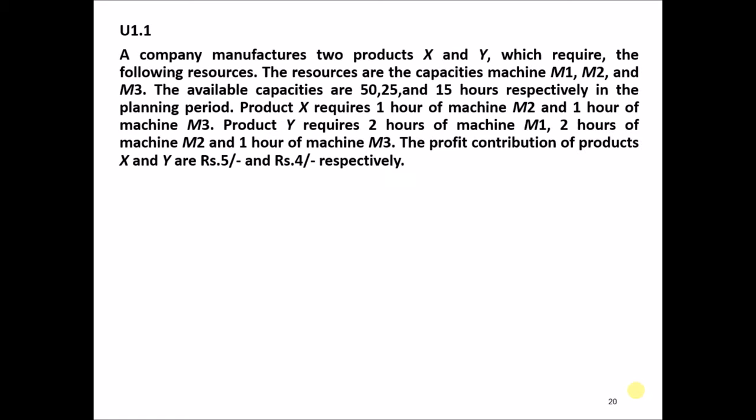The first problem: a company manufactures two products X and Y, which require the following resources — the capacities of machines M1, M2, and M3. The available capacities are 50, 25, and 15 hours respectively in the planning period. Product X requires 1 hour of machine M2 and 1 hour of machine M3. Product Y requires 2 hours of M1, 2 hours of M2, and 1 hour of M3. The profit contributions of products X and Y are rupees 5 and rupees 4 respectively.